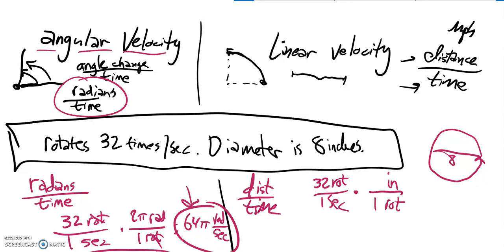If the diameter is 8, that means that all the way around the circumference is 8 pi, diameter times pi. So rotations cancel out. 32 times 8 pi, that's 256 pi.